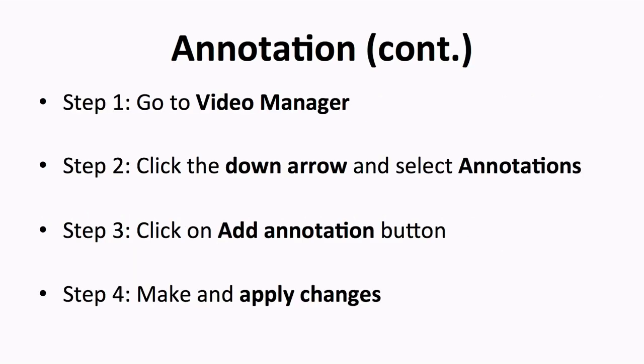To add annotations on your video, you will first need to go to the video manager. Click on the down arrow and select Annotations. This is the place where you can manage all the annotations for your videos. When you are on the annotation page, you will see a page with all your videos. Beside each video, there is an Add Annotation button. Select the video that you wish to add an annotation to and click on the button beside the video. You'll then be redirected to the page where you can edit and create your annotation. You can decide when and where you want the annotation to be in your video, and the duration of the annotation. Make the necessary changes and apply them.